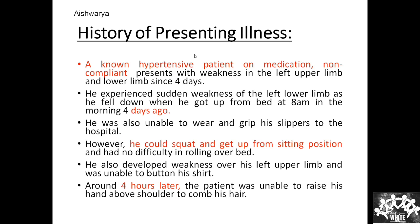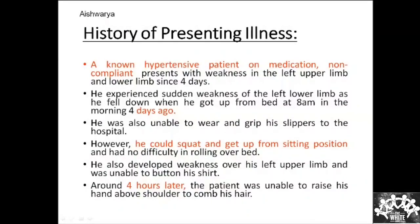Someone is asking about the significance of handedness. Right-handed individuals have a dominant left hemisphere. Even left-handed people, about 70–80%, have left hemisphere dominance. Regarding distal versus proximal muscle weakness: in pyramidal weakness, in the upper limb the flexors are stronger than the extensors, whereas in the lower limb the extensors are stronger than the flexors. Pyramidal weakness in the upper limb affects distal muscles more, and the proximal muscles are also weak. In your history, the patient was able to get up from a squatting position, implying proximal muscle function.